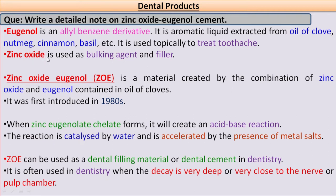Zinc Oxide is used as a bulking agent and filler. The combination of Zinc Oxide and Eugenol — where Eugenol is present in clove oil — is known as Zinc Oxide Eugenol Cement. This cement was first introduced in 1980.